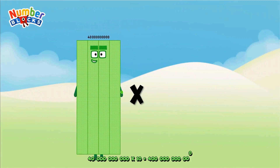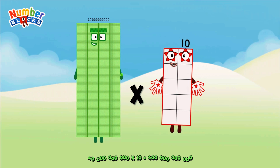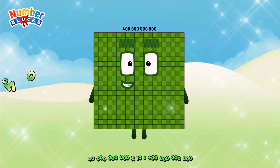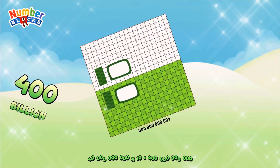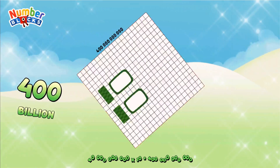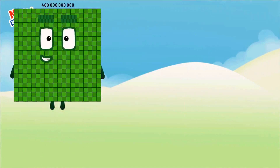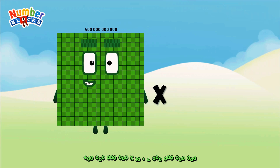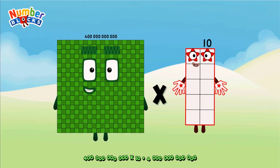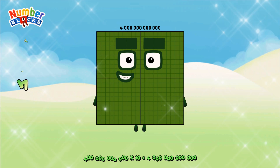Forty billion, multiplied by ten, equals four hundred billion. Four hundred billion, multiplied by ten, equals four trillion.